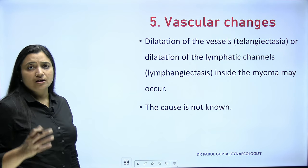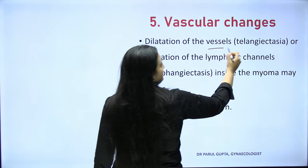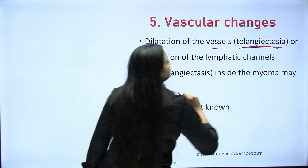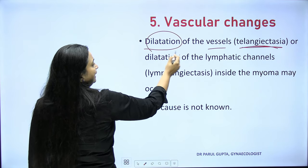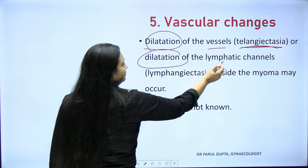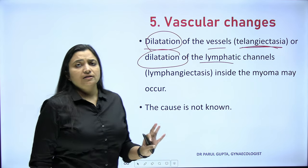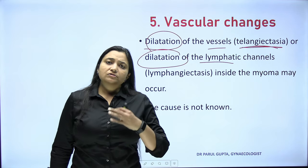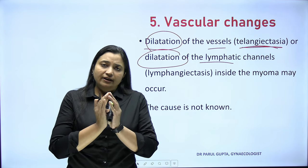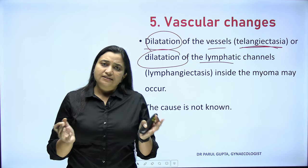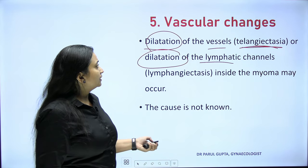Vascular changes: telangiectasia — the dilatation of vessels — and dilatation of the lymphatic channels may also occur. The cause is unknown; for some idiopathic reason the lymphatic channels or blood vessels get dilated.